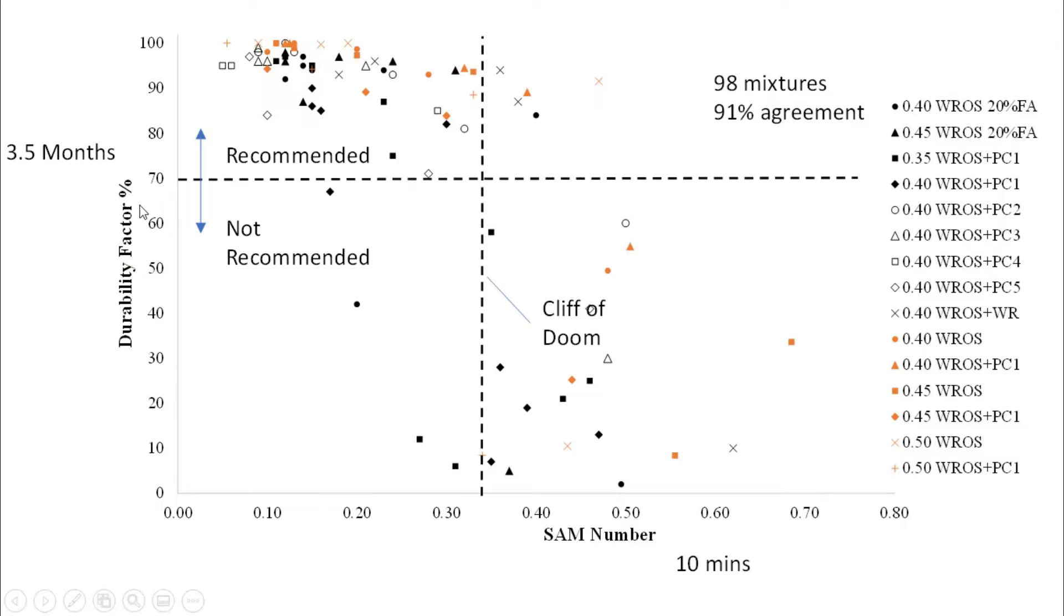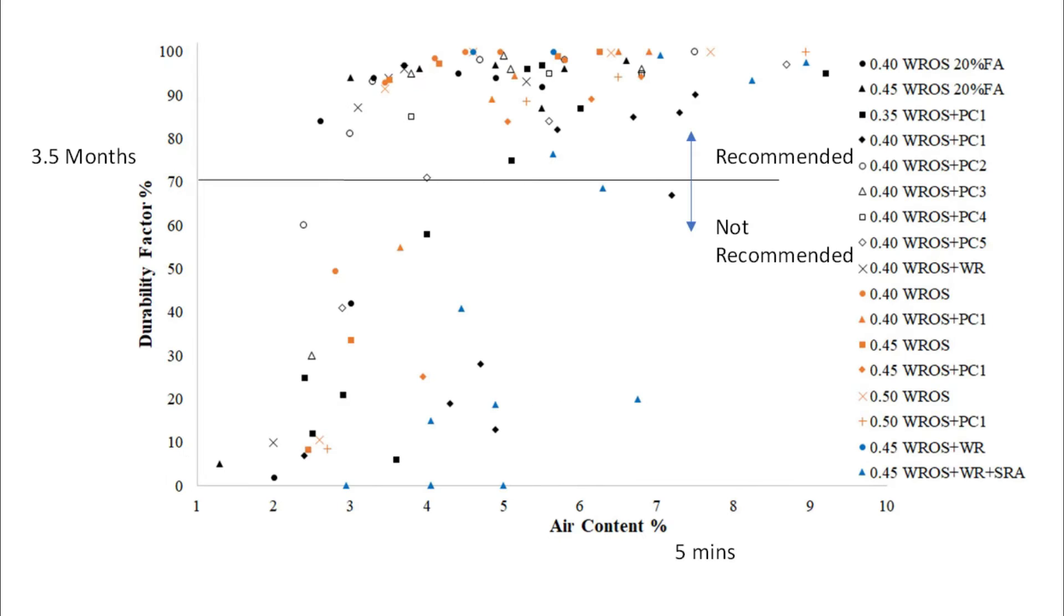But if instead we change and we plot durability factor on the y-axis versus SAM number, that is much more in tune with bubble spacing, then everything lines up much better. You have the large majority of the data up here and down here. And as the SAM number goes up, when it gets to about 0.32, you hit what's called the cliff of doom. The cliff of doom is when your concrete's going to fail and freeze thaw durability. And it's very clear where the cliff of doom is here with the SAM number. It is not so clear if it's just using the air volume.